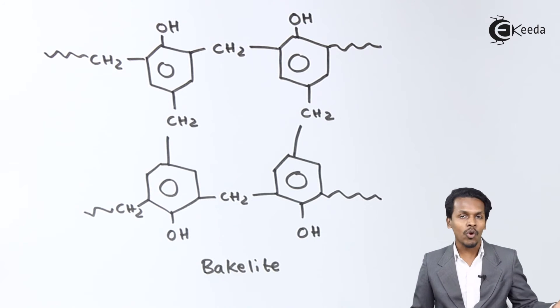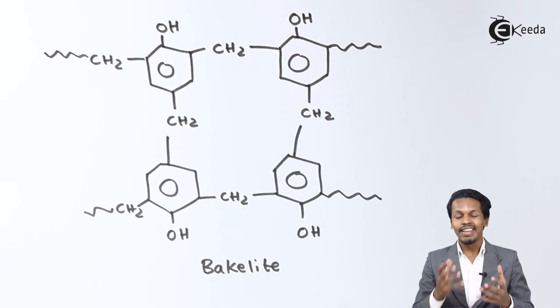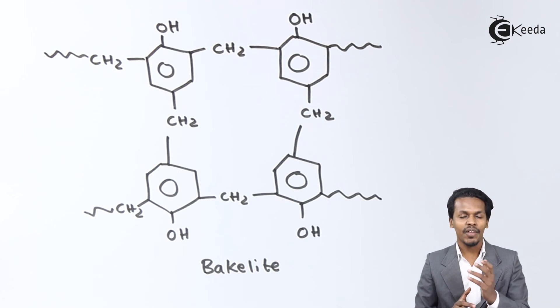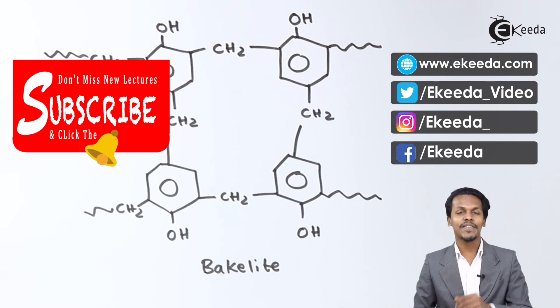This is a cross-linked polymer and a very rigid molecule. That's why it is also known as a thermosetting polymer. This is how we can prepare Bakelite. Thank you for watching this video. I hope you understood this clearly.